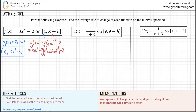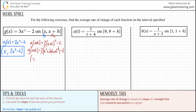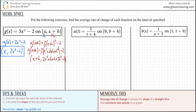Now I can distribute the 3, where it would be 3x² + 6xh + 3h² minus 2. So I'm going to write my coordinate to save a little space. The x value is x+h, and the y value — distributing the 3 — is 3x² + 6xh + 3h² - 2.